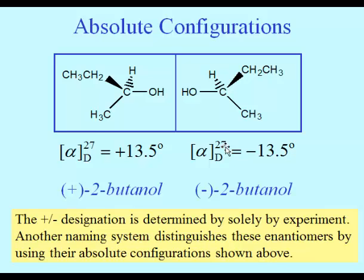Here are two molecules — both 2-butanol — drawn to highlight their chiral carbons, or chiral centers. They are labeled according to the fact that one rotates light 13.5 degrees clockwise (the one on the left), and the other rotates light exactly 13.5 degrees counterclockwise. We can include that in their names: (+)-2-butanol and (−)-2-butanol. That's one way to distinguish them from each other.